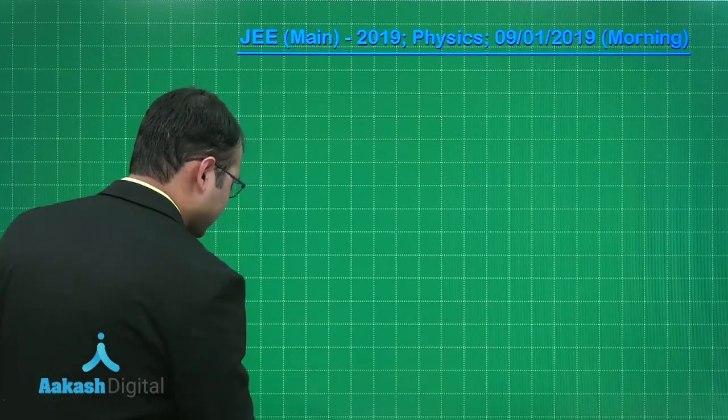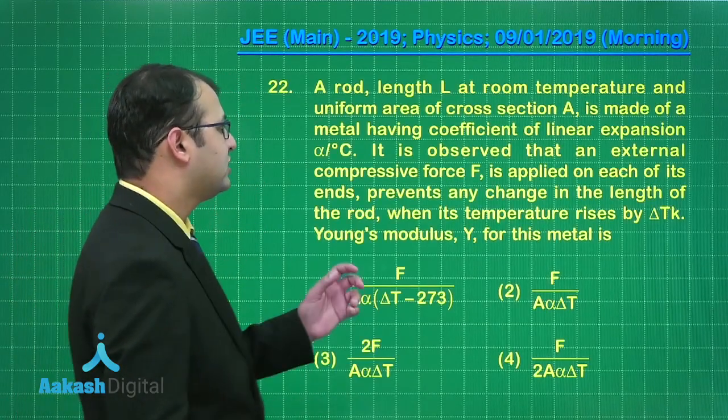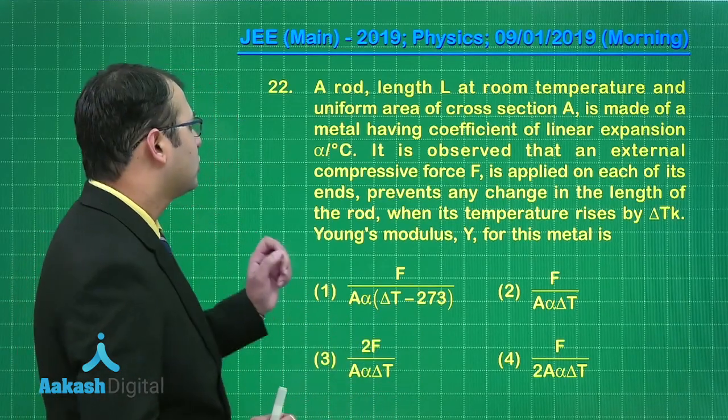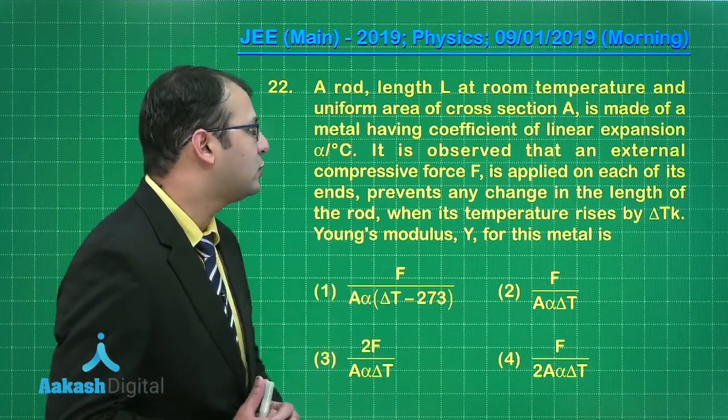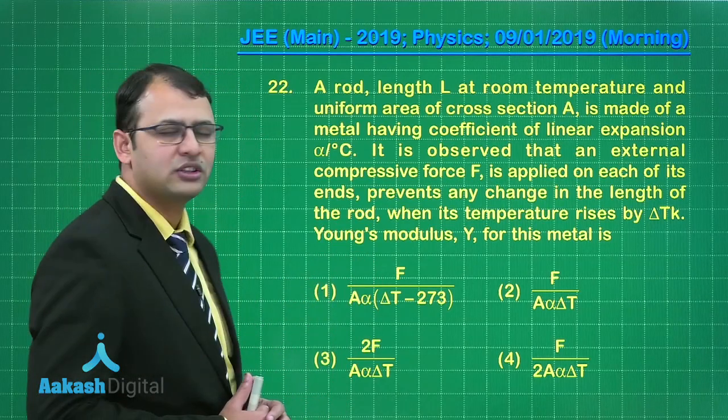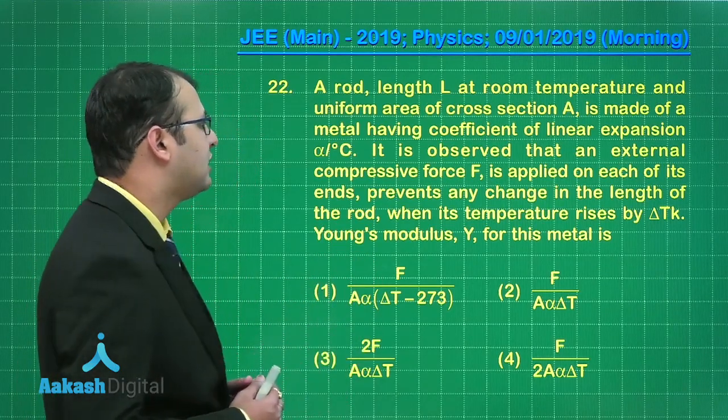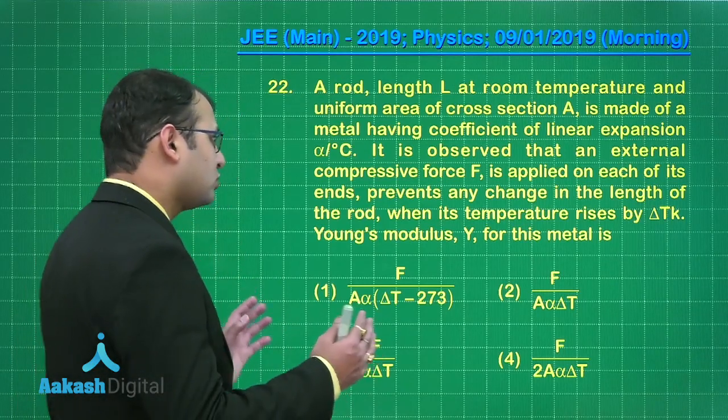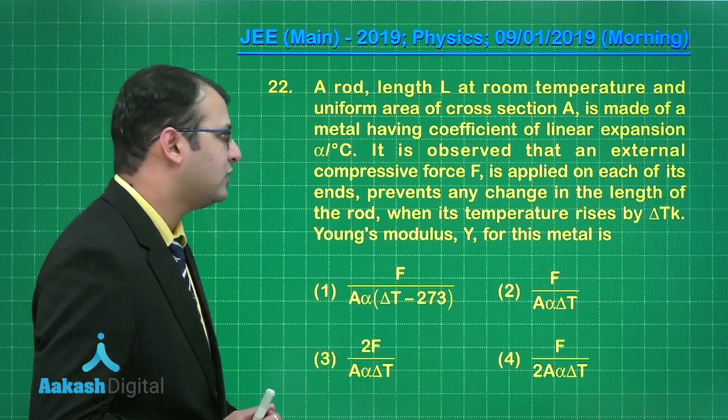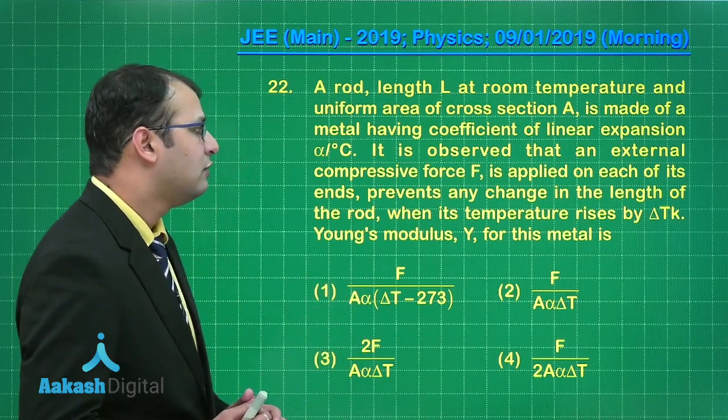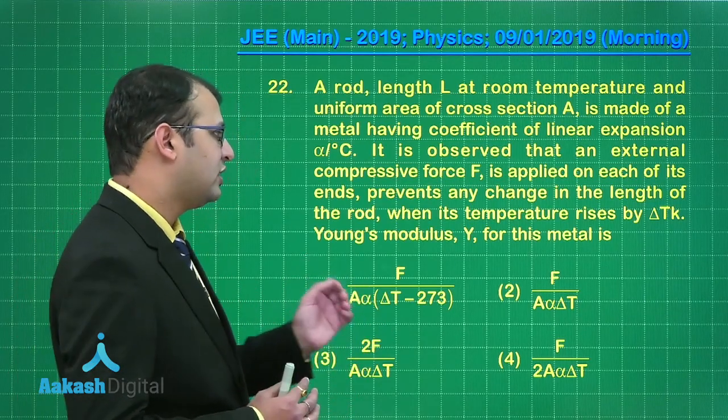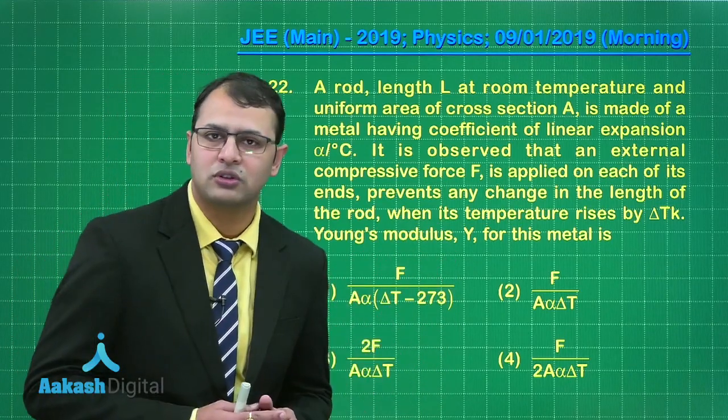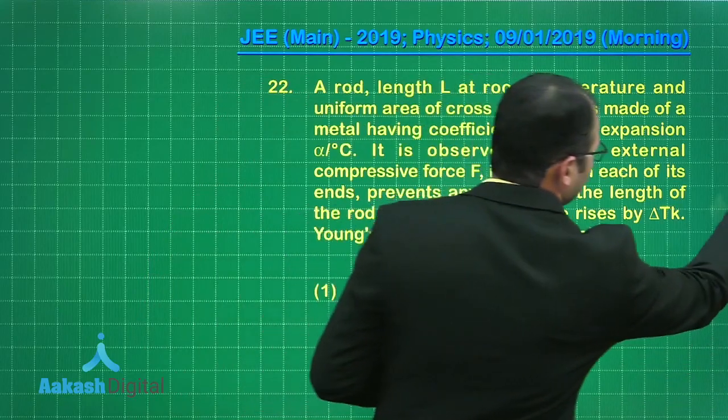Let's take our next question, that is question number 22. This question belongs to the section of heat and thermodynamics. The question says a rod of length L at room temperature and uniform area of cross section A is made of a metal having coefficient of linear expansion alpha. It is observed that an external compressive force F is applied on each of its ends which prevents any change of length when the temperature rises by ΔTK. We have to find the Young's modulus of the metal.